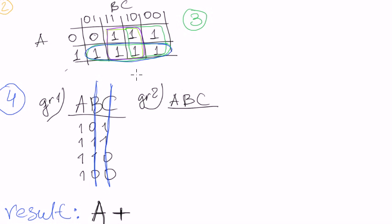So a, b, c. What cases do we have in this group? In this purple one. We have 0, 1, 1 for this cell. Write down 0, 1, 1. Then for this cell, it's 0, 1, 0.